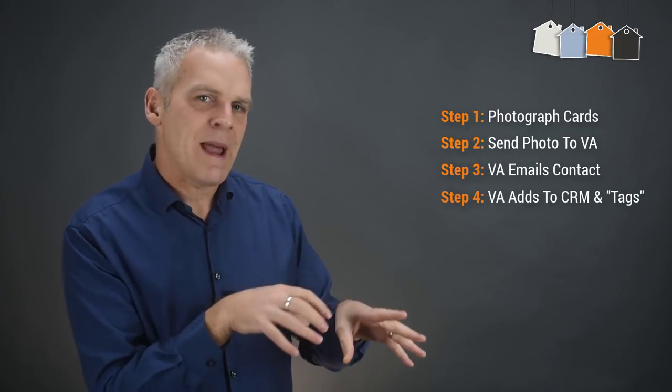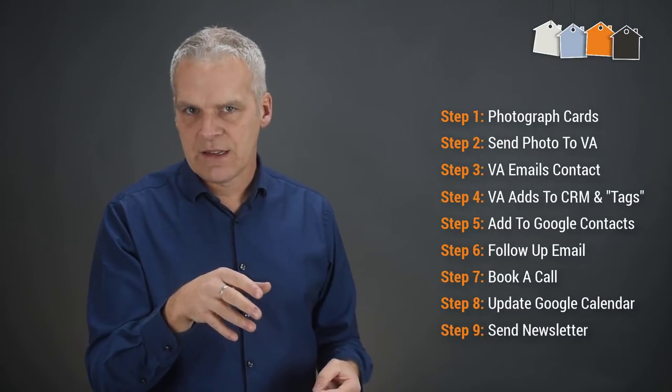Step three, the VA then sends an email to the contact. Step four, they add them to your mailing list or your CRM and tag them accordingly. Step five, they add them to your Google contacts. Step six, they follow up with an email asking if they'd like to have a call with you. Step seven, they book the call. Step eight, they update your Google Calendar accordingly. Step nine, they send the contact your newsletters on an ongoing basis, etc.